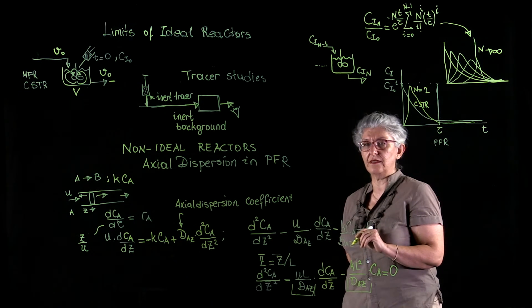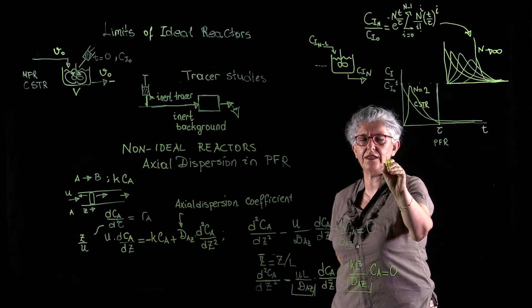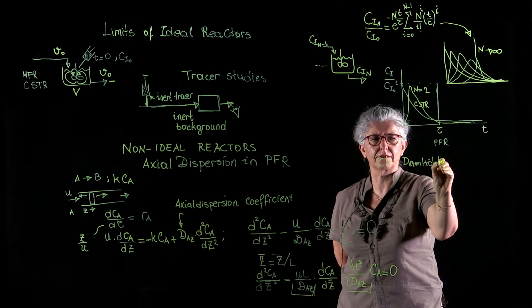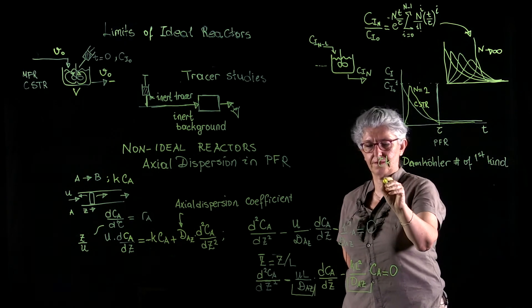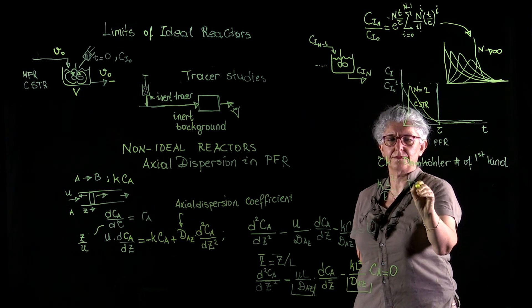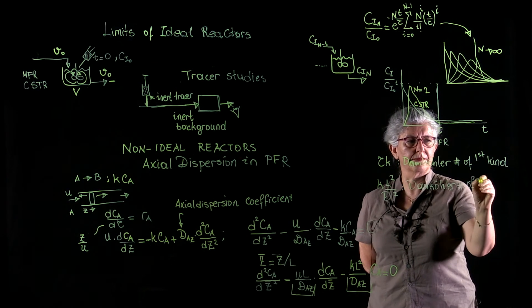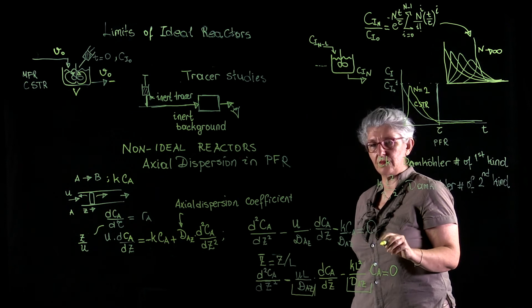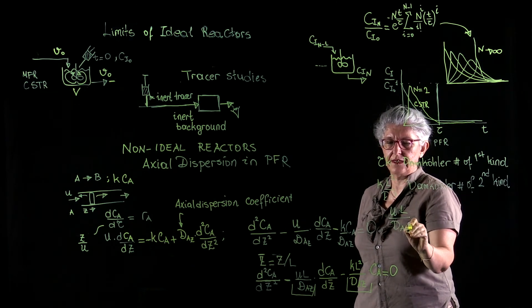One is the Peckler number and the other is the Damköhler number of the second kind. So, the Damköhler number of the first kind was tau k, if you remember. Now we have a second kind: k L squared over dAz. And then we have a new dimensionless number, which is uL over dAz, and this is the Peckler number.